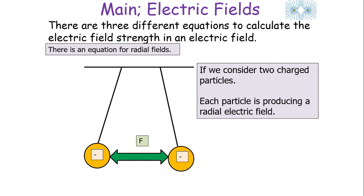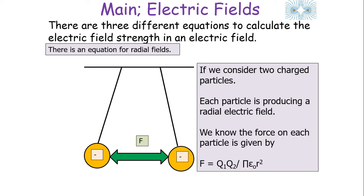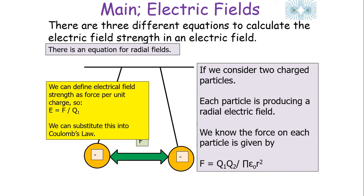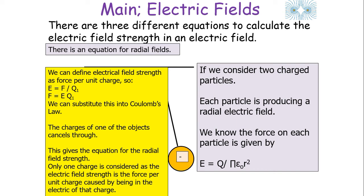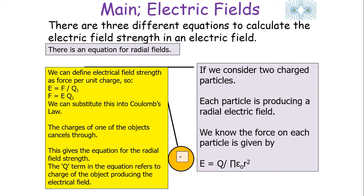There is also a third equation, just for radial fields. If we consider two charged particles, each producing a radial electrical field, the force on each particle is given by Coulomb's Law: F equals Q₁Q₂ over 4πε₀r². We define electrical field strength as force per unit charge, so E equals F over Q₁, which we substitute into Coulomb's Law using F equals EQ₁. The Q₁ terms cancel, giving us E equals Q over 4πε₀r². Only one charge is considered, as E is the force per unit charge caused by being in the field of that charge — so Q refers to the charge producing the field.